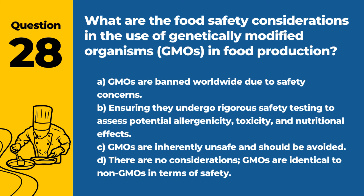Question 28. What are the food safety considerations in the use of genetically modified organisms (GMOs) in food production? a. GMOs are banned worldwide due to safety concerns. b. Ensuring they undergo rigorous safety testing to assess potential allergenicity, toxicity, and nutritional effects. c. GMOs are inherently unsafe and should be avoided. d. There are no considerations; GMOs are identical to non-GMOs in terms of safety. Answer: b. Ensuring they undergo rigorous safety testing to assess potential allergenicity, toxicity, and nutritional effects. GMO safety is carefully evaluated before they are approved for food production.